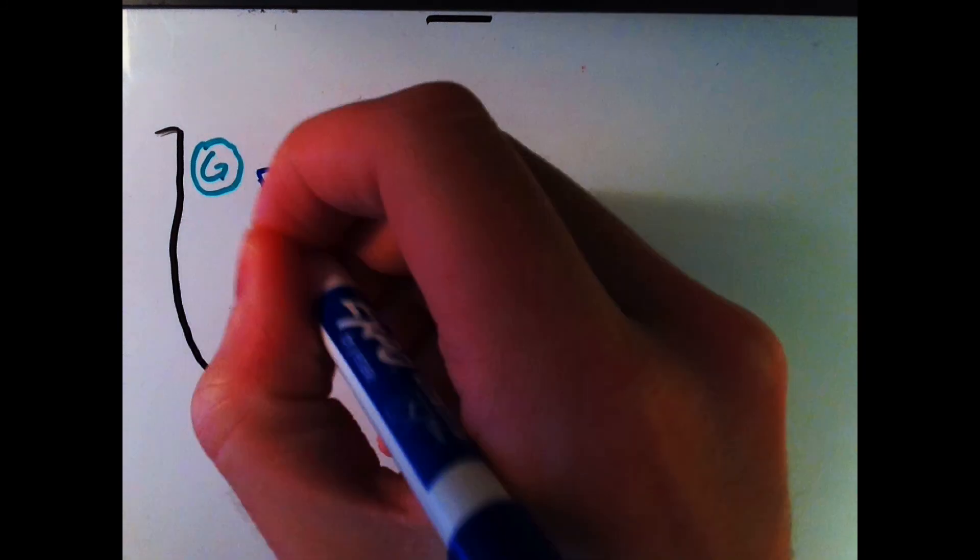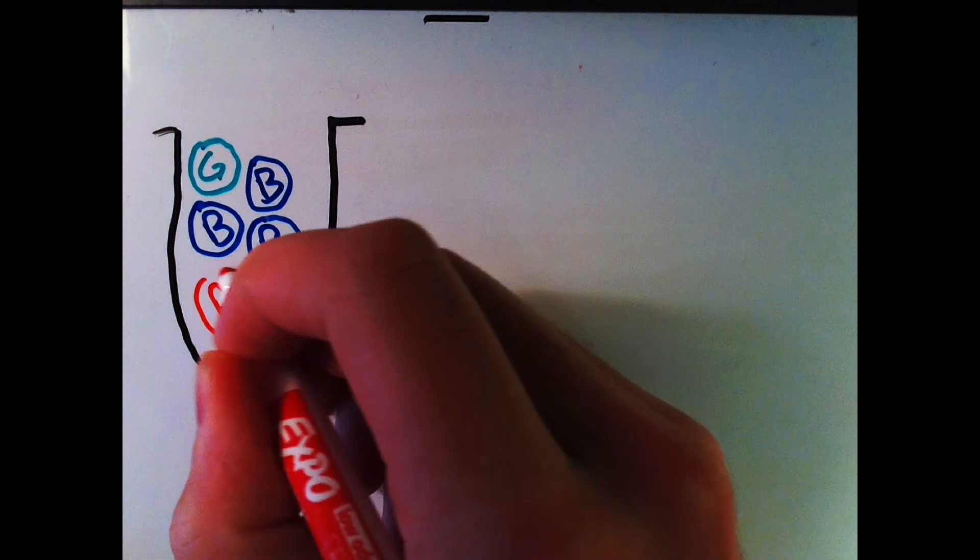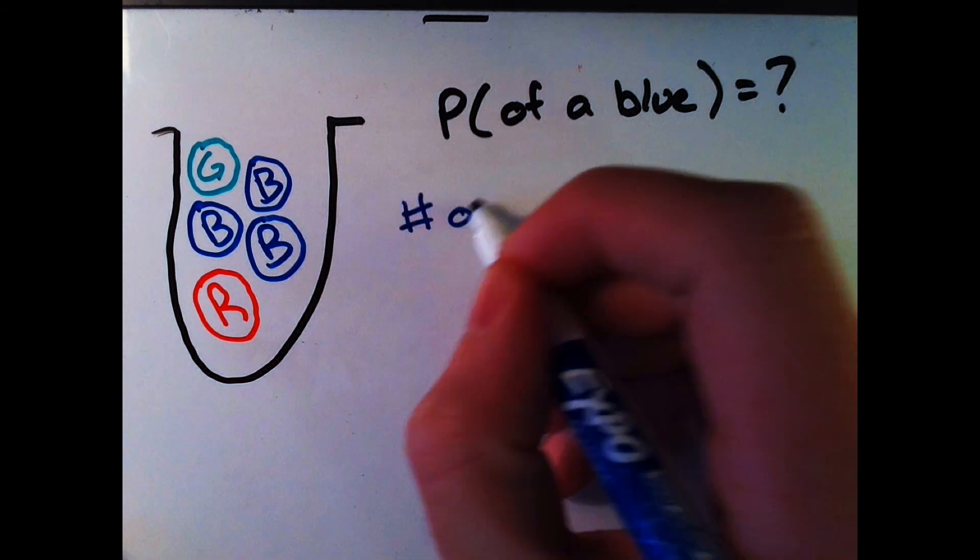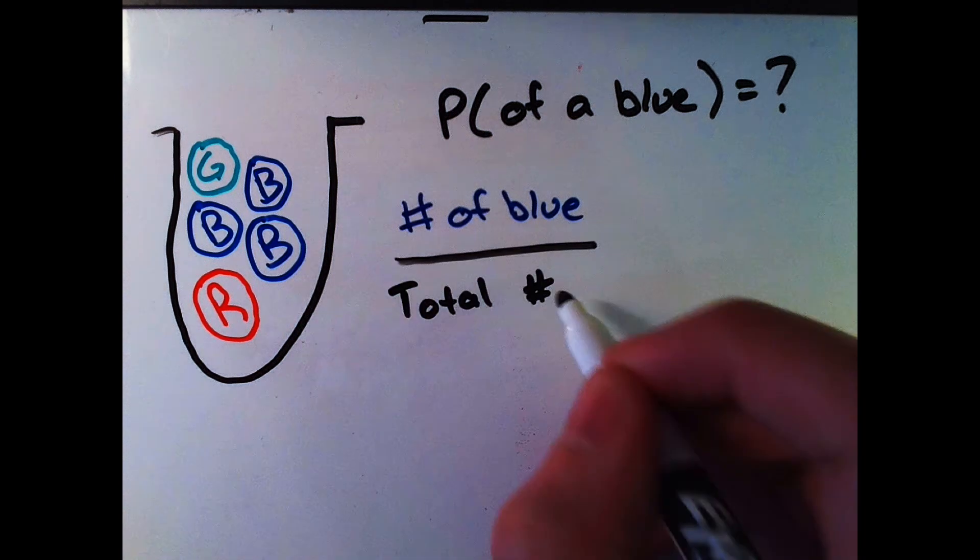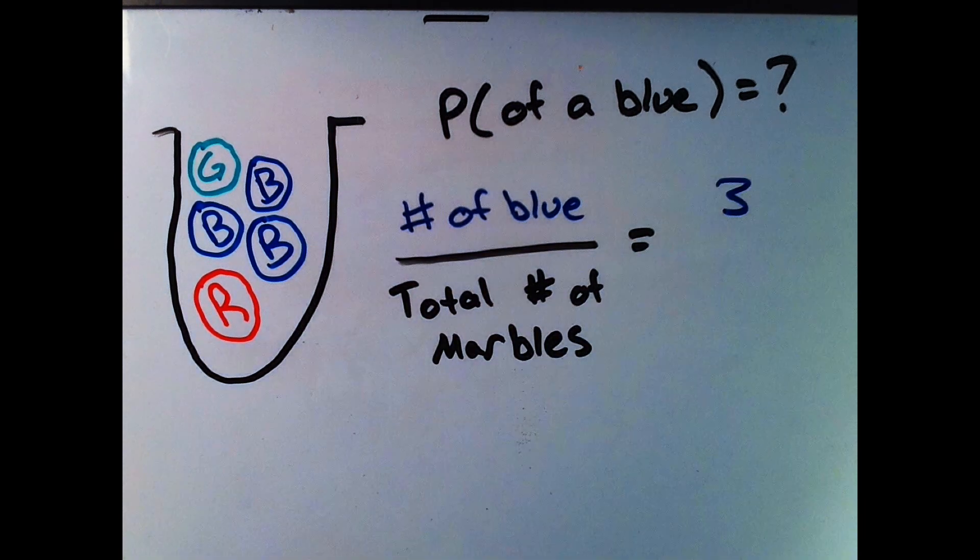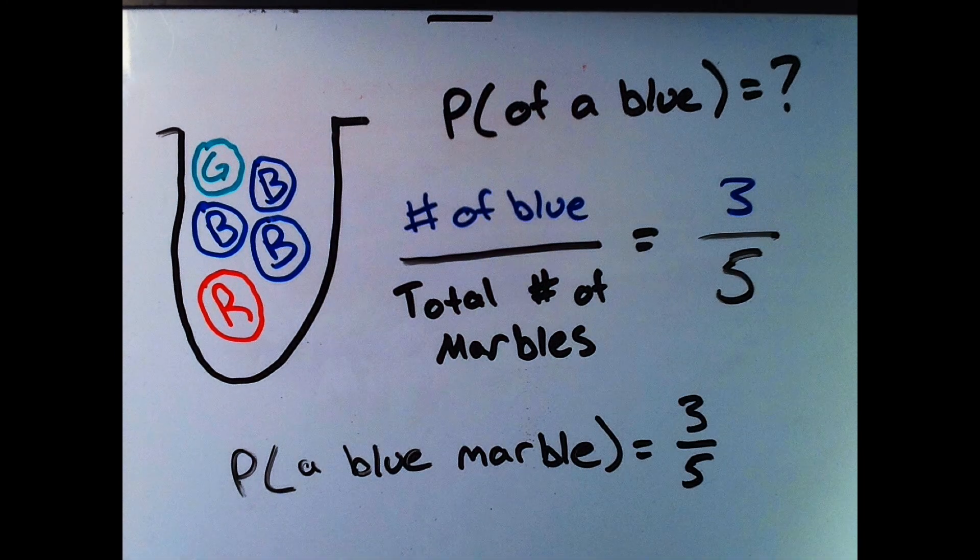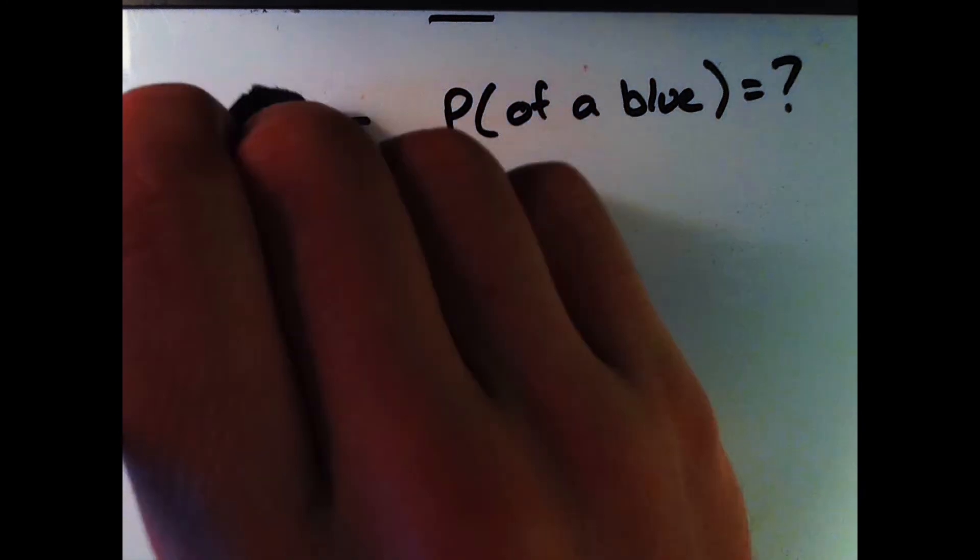If we first have a bag here that involves one green marble, three blue marbles, and one red marble, and we want to find the probability of drawing a blue marble without replacement, we would take the number of blue marbles in the bag over the total number of marbles, which is three to five. So the probability of drawing a blue marble is three over five.